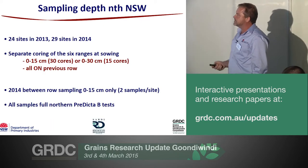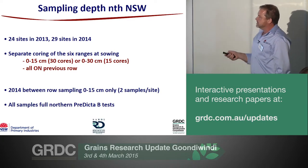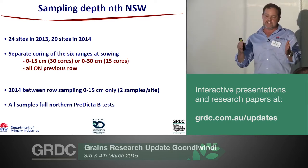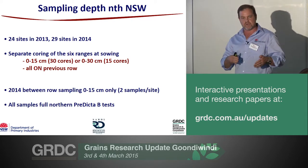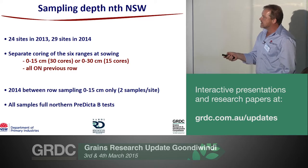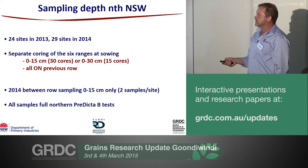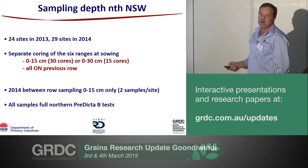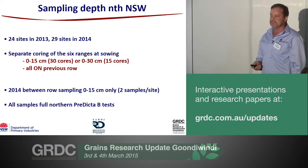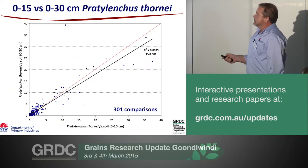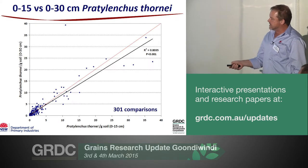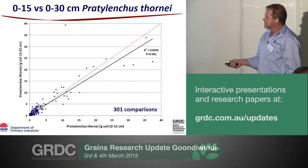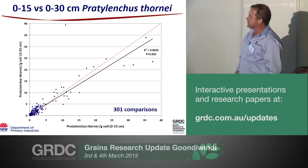The other thing we're interested in is sampling depth. We did 24 sites in 2013 and 29 sites in 2014, running six ranges in our own trials and NVT trials. We're looking at a sampling strategy at a commercial level: taking a 0-15 cm sample versus a 0-30 cm sample, with people taking separate cores — not going in the same hole. All our sampling was targeted on the previous row. We're looking at populations in grams of nematode per gram of soil. With 0-15 cm along the bottom versus the 0-30 cm, across 301 comparisons we got a pretty good R-squared — about 80% correlation.